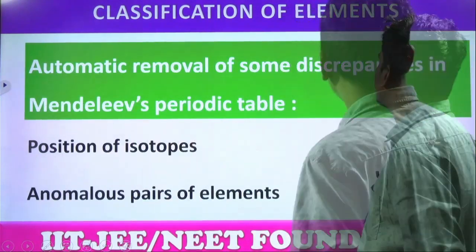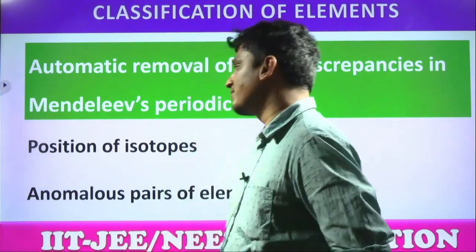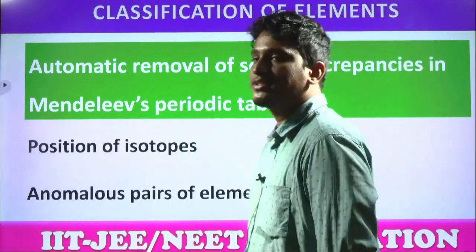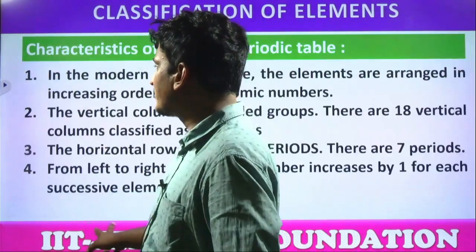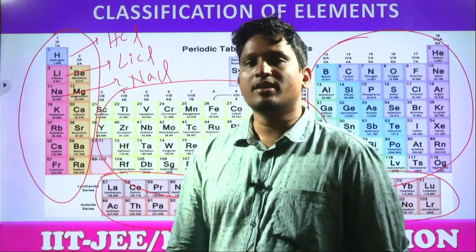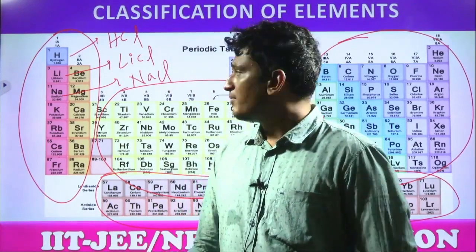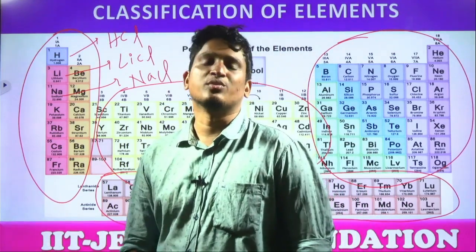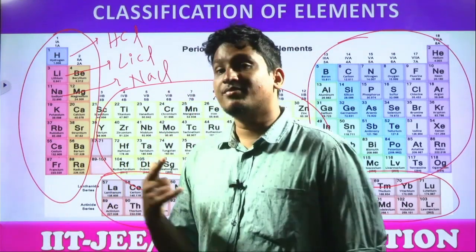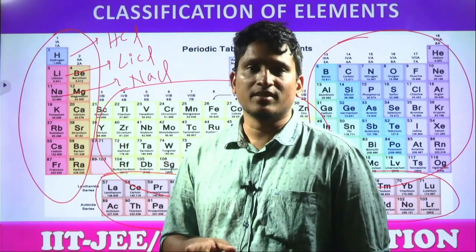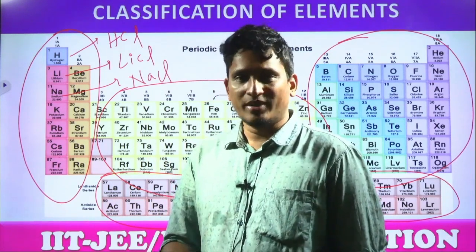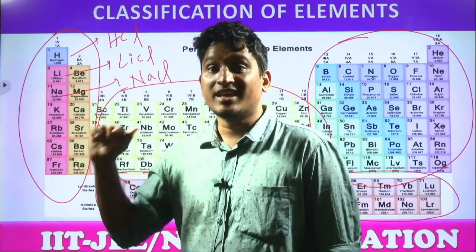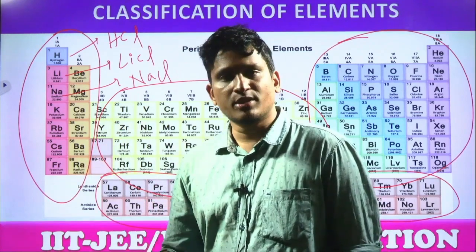Next, automatic removal of some disadvantages in the Mendeleev periodic classification. First: position of isotopes and anomalous pairs of elements. Isotopes are not classified in the Mendeleev's periodic table — that was a drawback. But here, isotopes are not classified either. Is that a drawback here? No. Because here the classification is done according to atomic numbers, and all isotopes have the same atomic number — so there is no need to classify them separately.